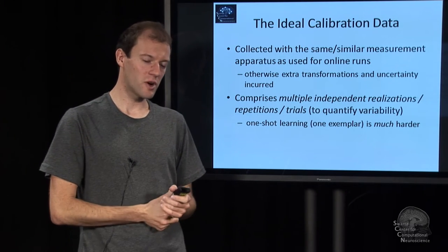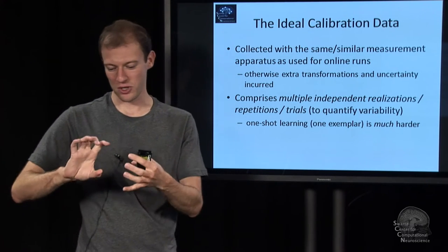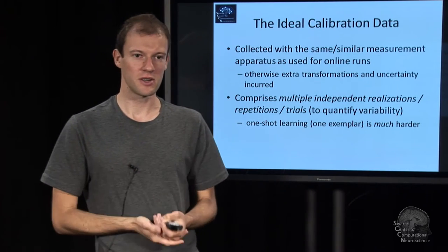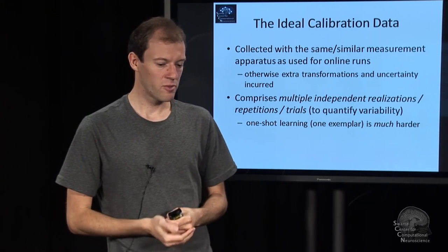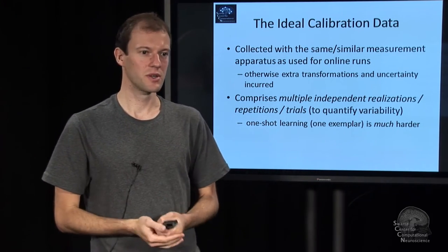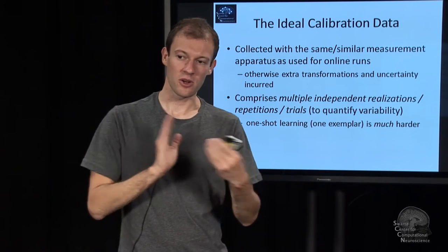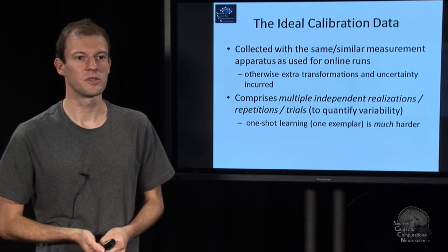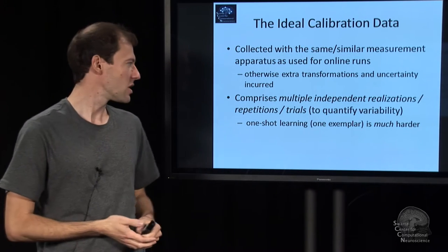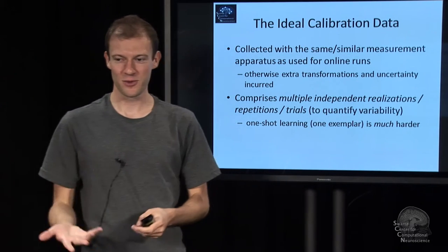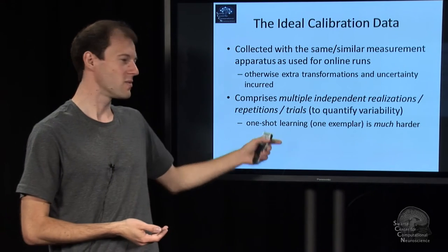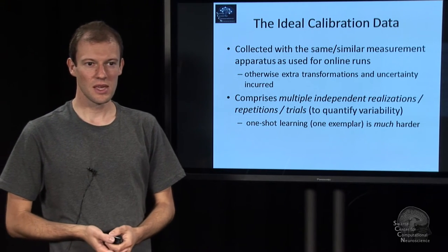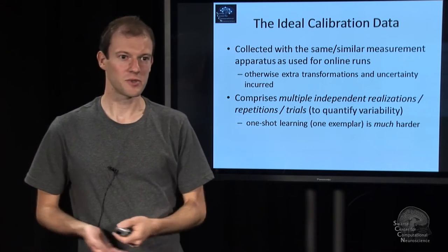Then you usually want, if you want to study a particular brain process and how it's expressed in data, you need multiple independent realizations of that process. Because it might vary across realizations that you need to somehow quantify that variability. It's much harder if you try to do it from one exemplar, even though it can be done. That is called one-shot learning.